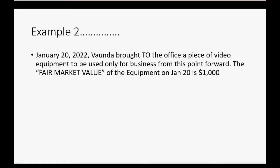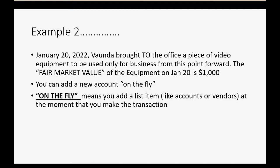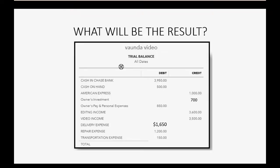Example 2: on January 20th, 2022, Vonda brought to the office a piece of video equipment to be used only for business going forward. The fair market value of the equipment on January 20th is $1,000. The result: Equipment, as a new account, will show up for the first time at $1,000 — that was the value when Vonda brought it in — and because it came from the owner to the business, Owner's Investment will also increase by $1,000 to become $1,700.